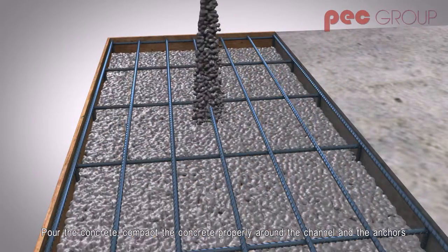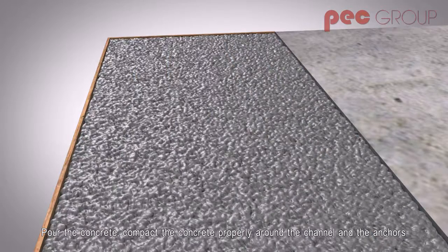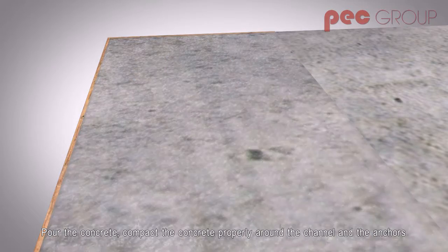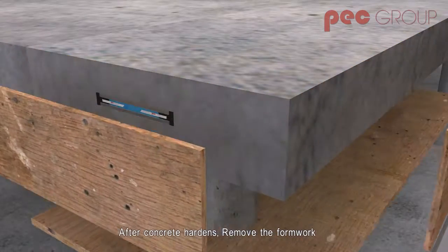Pour the concrete, compact the concrete properly around the channel and the anchors. After concrete hardens, remove the formwork.